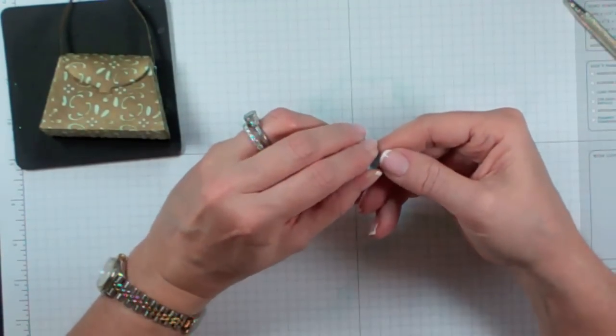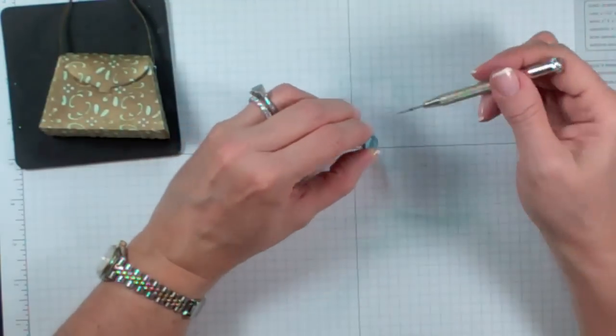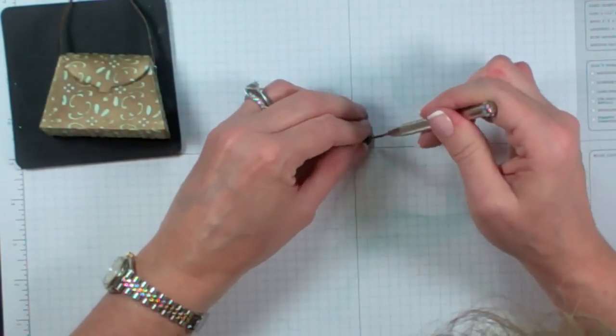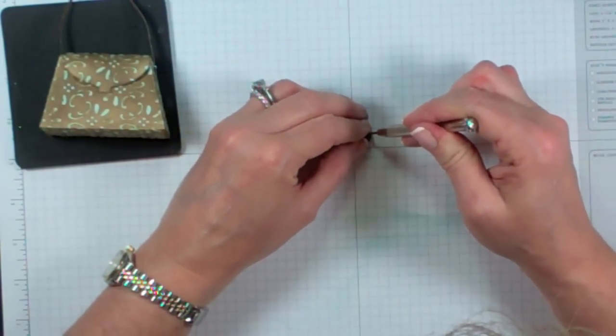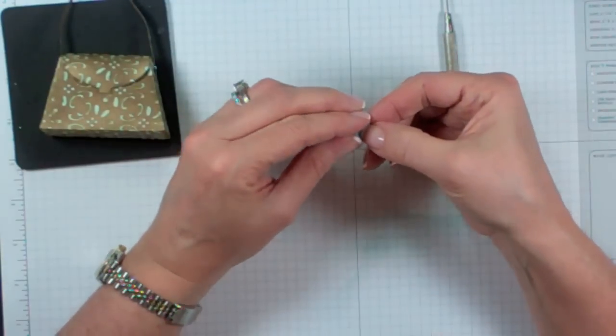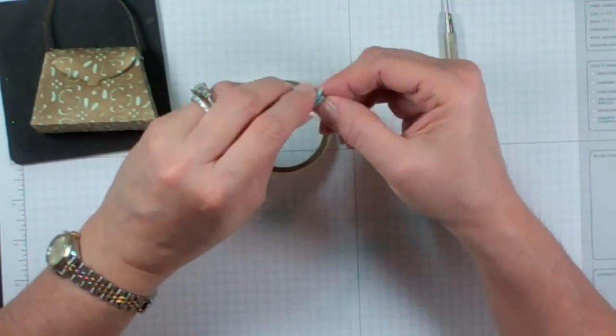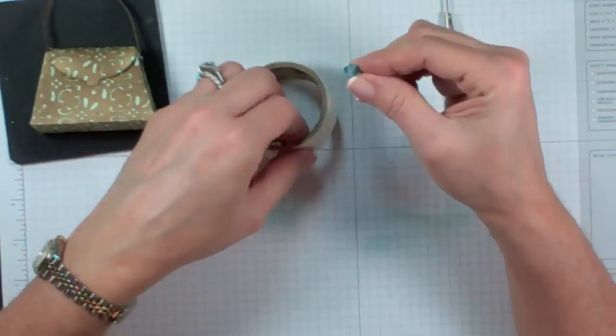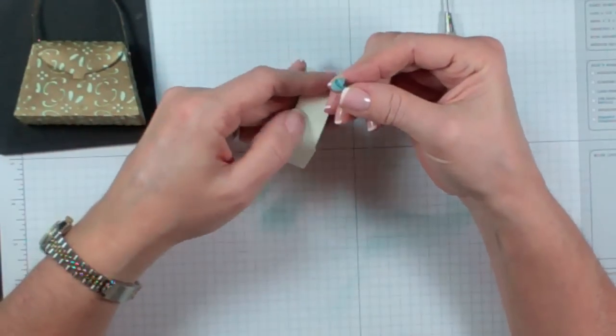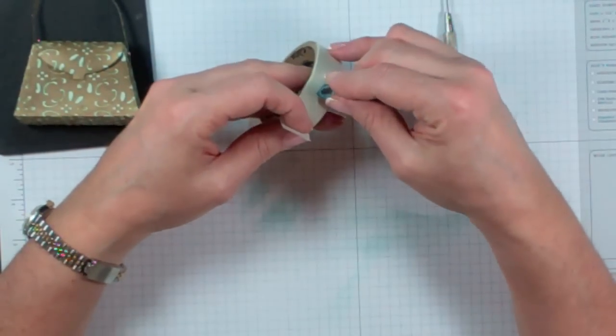So you're just going to basically curl that up until you've used your whole entire circle. And then it's like a little flower. So I want to push that inside down a little bit because I don't want it sticking up. I want a little indentation. Once I have that done, I'm going to take mini glue dots and just push that whole flower into the glue dot to hold it together.